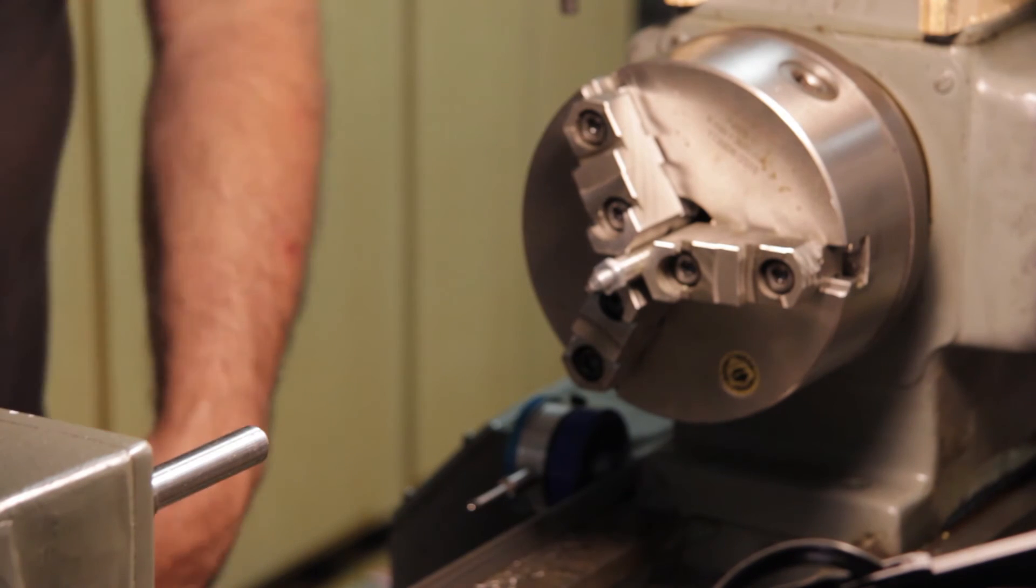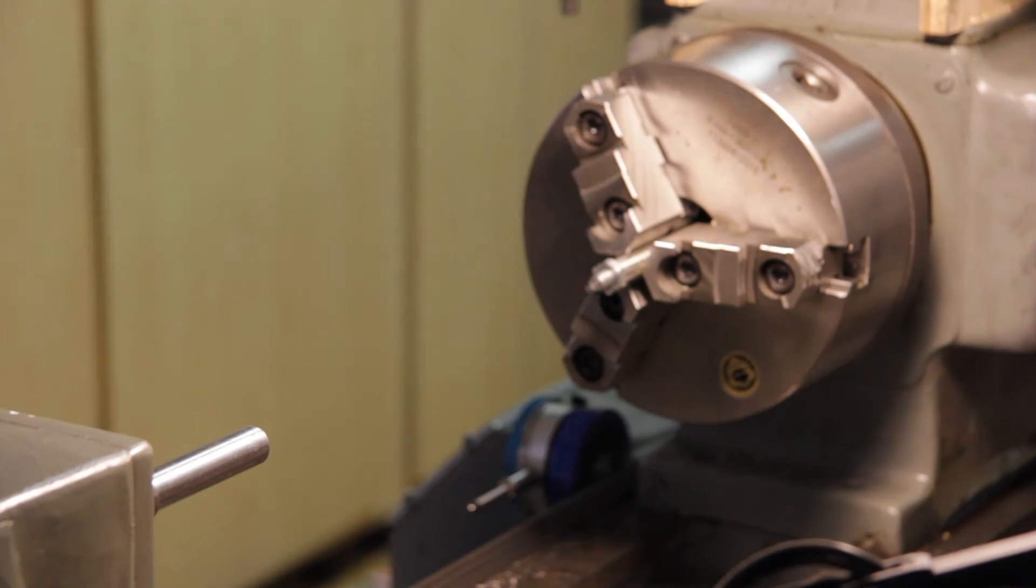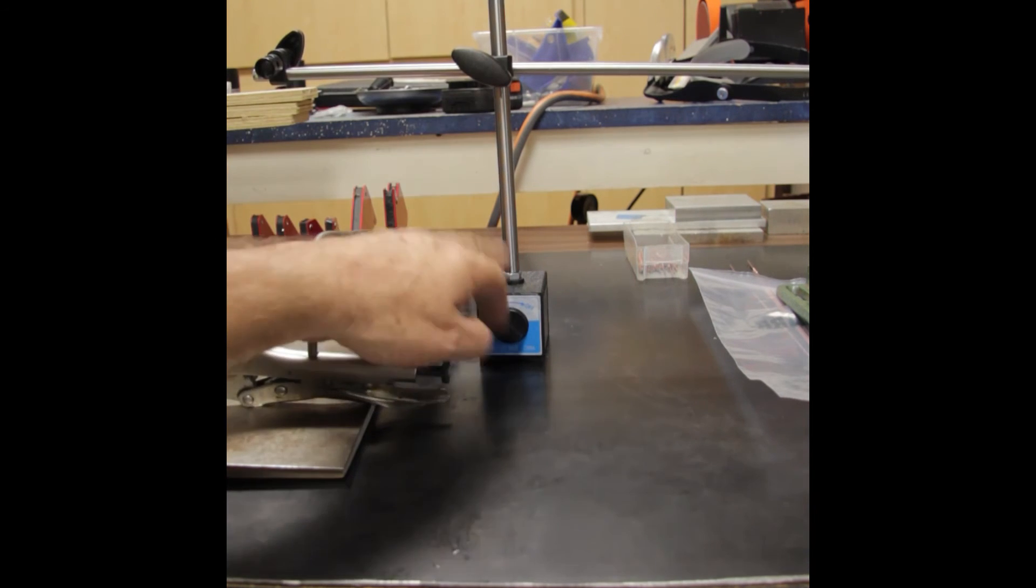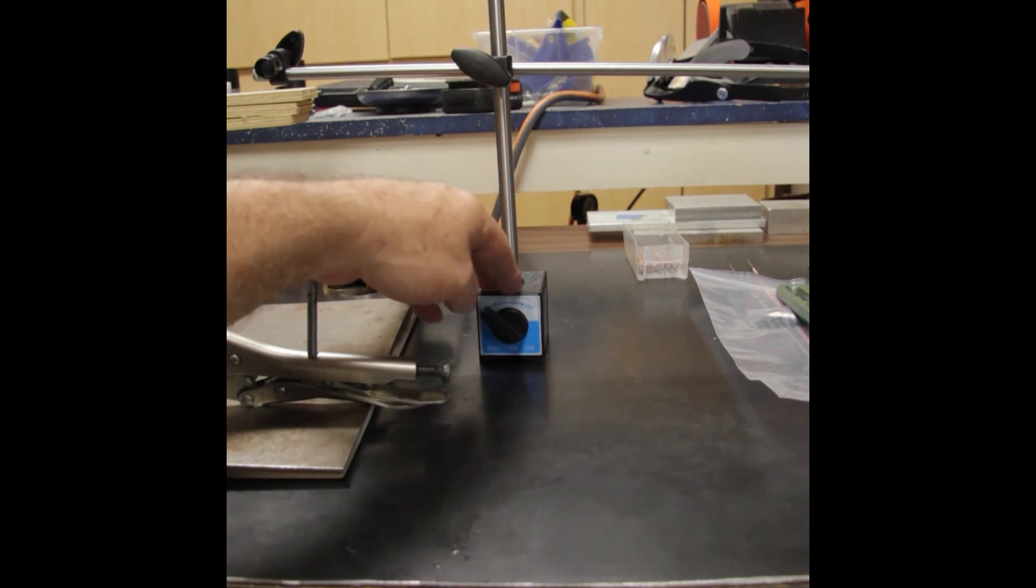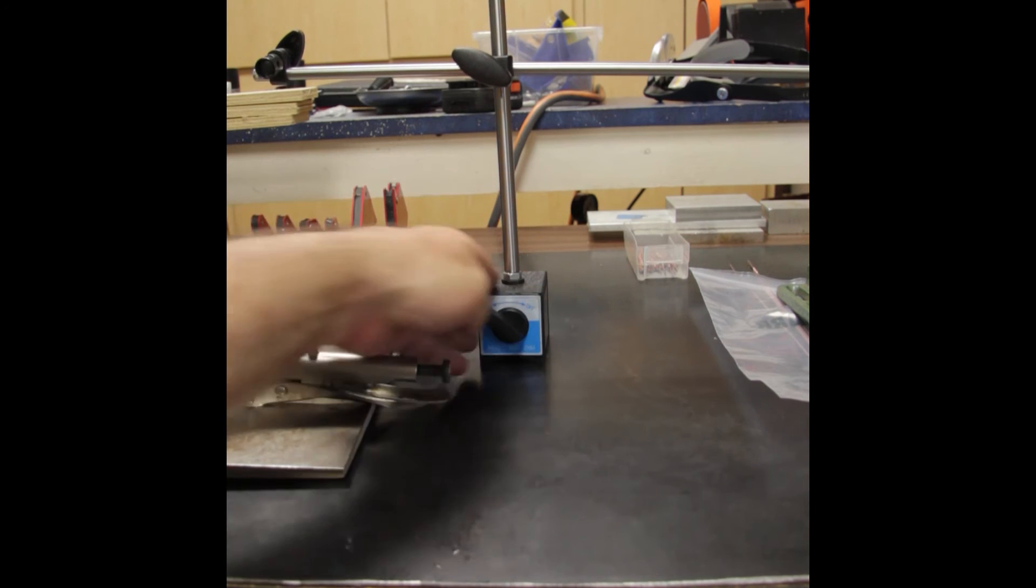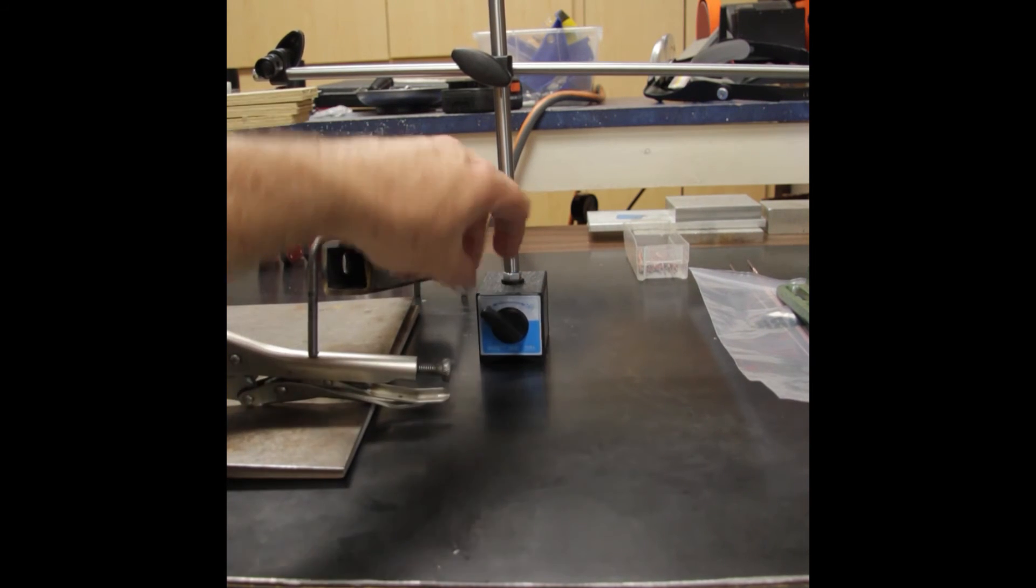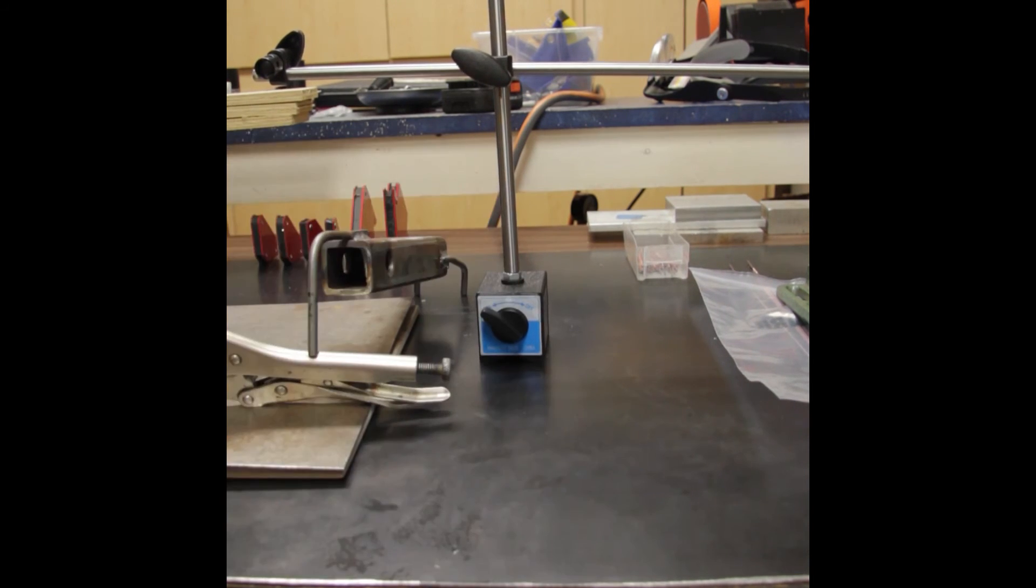Let's go over and see how it fits in the dial indicator base. After turning and threading the drill rod I've screwed it into the dial indicator magnetic base. This is a cheapo one I picked up from Harbor Freight tools.